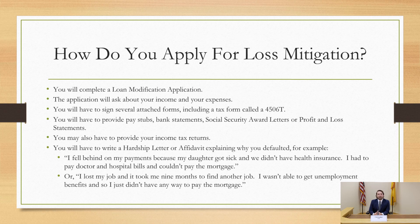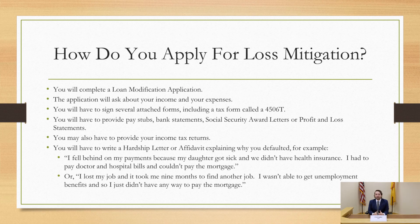So how do you apply for loss mitigation? The bank or the bank's attorney should have sent you the loan modification application. You will need to fill it out and attach accompanying documents, which could include pay stubs, bank statements, social security award letters if you receive social security, and a profit and loss statement if you own your own business. You'll also need to fill out and sign a 4506-T — a tax form giving the lender authorization to pull your tax returns. If that doesn't work, you may be required to provide a physical copy of your tax returns. Last but not least, you'll be required to provide a hardship letter or hardship affidavit explaining why you went into default — this could be as simple as stating you lost your job, or longer depending on your specific circumstance.